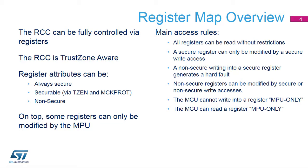The RCC can be fully controlled via registers and offers TrustZone capabilities, handling three kinds of secure attributes. The Always Secure registers can be modified only by performing write-secure accesses. The Securable registers can be switched to secure or non-secure mode via two bits, TZEN and MCK_PROT, located in an Always Secure register. TZEN and MCK_PROT bits enable the application to control the security perimeter. And the Non-Secure registers can be modified by secure and non-secure write-accesses.